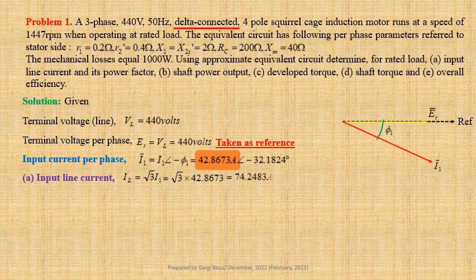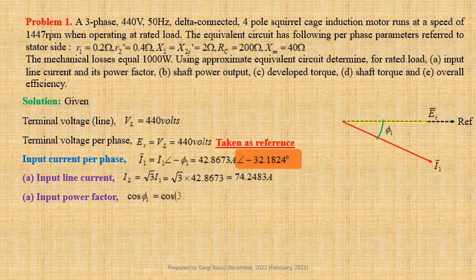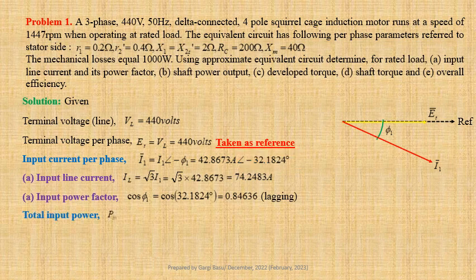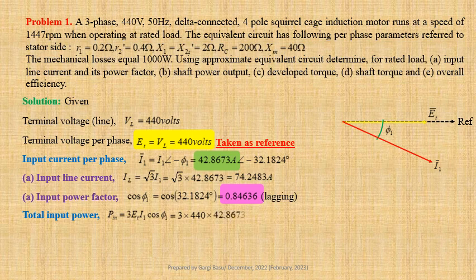Input power factor: cos φ1 = cos(32.1824°) = 0.84636 lagging. For a three-phase induction motor, total input power Pin = 3 × Et × I1 × cos φ1 = 3 × 440 × 42.8673 × 0.84636 ≈ 47891 W.